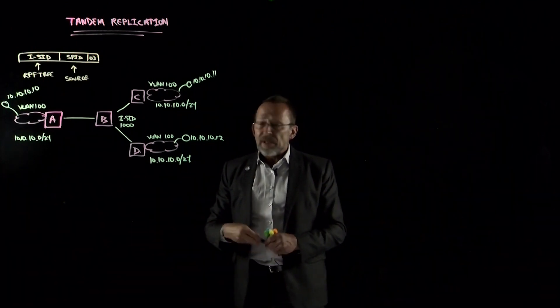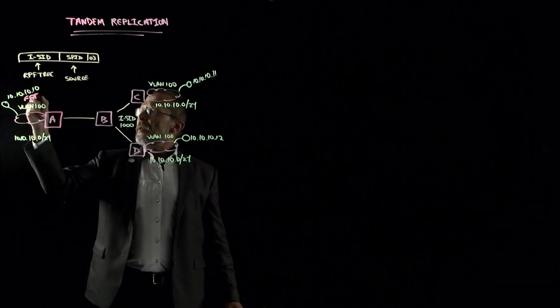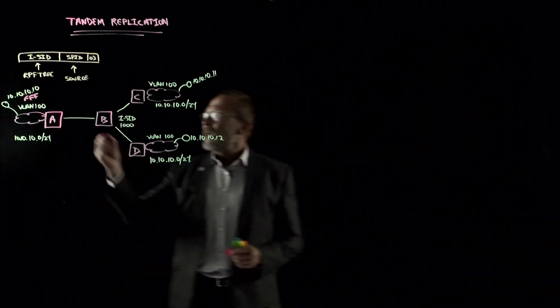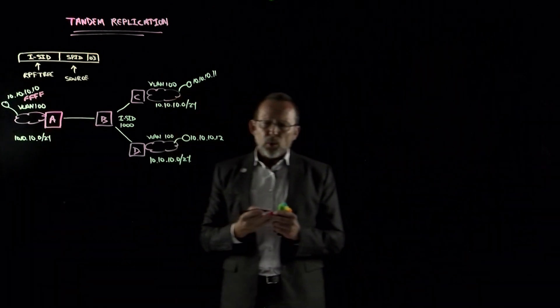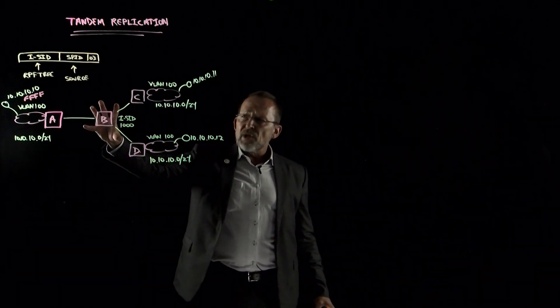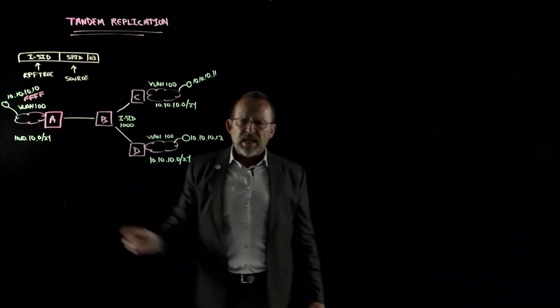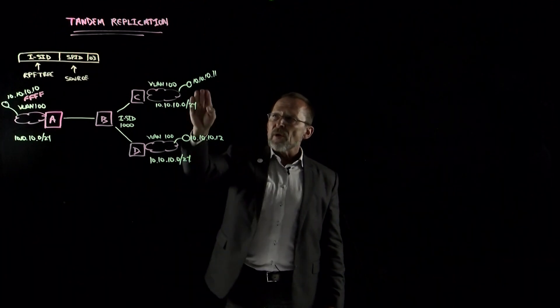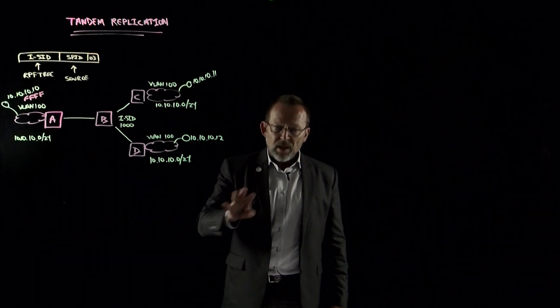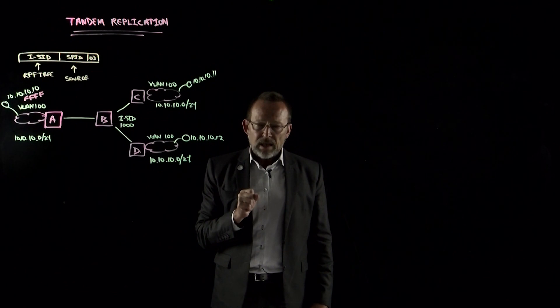In this scenario, we're going to use a very simple type of process called address resolution. We have network address 10.10.10.10, and it's looking for 10.10.10.12. We have a common community based on ISID-1000, and VLAN-100 is associated with three points in the network. This is a subnet of 10.10.0/24. We have two other stations, 10.10.10.11 and 10.10.10.12.